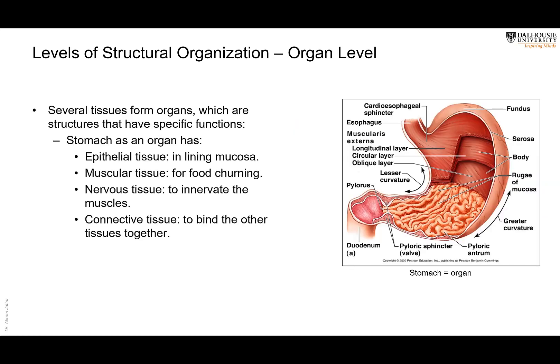Then tissues come together to form organs — like the stomach, for example. The stomach is a collection of all four types of tissues. We have the lining of the stomach, made of epithelial tissue, with glands that produce mucus and hydrochloric acid. This is covered by smooth muscle fibers, required for churning of food — mechanical digestion. We have nervous tissue supplying these muscles, and connective tissue binding all the tissues together. So the four basic tissues come together and form an organ, which is a higher level of structural organization.